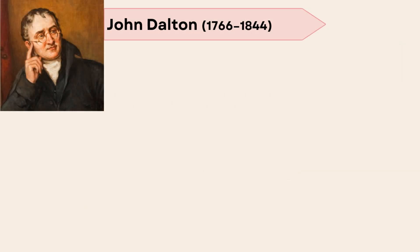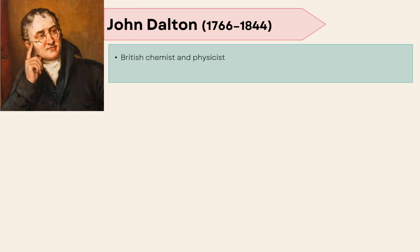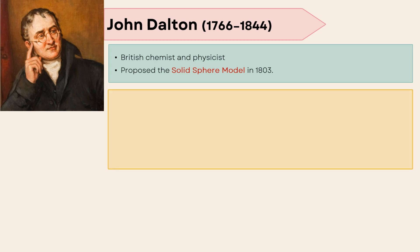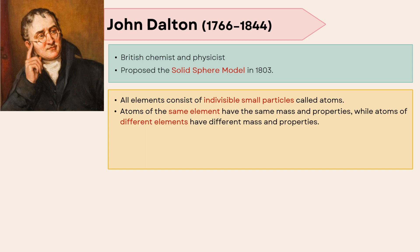John Dalton was a British chemist and physicist who proposed the solid sphere model in 1803. According to this atomic theory, all elements consist of indivisible small particles called atoms. Atoms of the same element have the same mass and properties, while atoms of different elements have different mass and properties. Compounds result from the combination of atoms in simple numerical ratios.